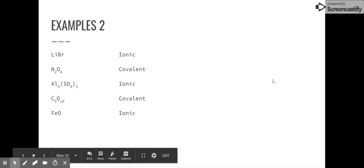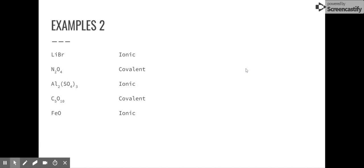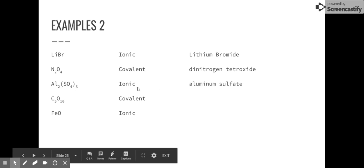So when we write the names, ionics are super easy. Just write them as you see them. There are no prefix. So it's going to be lithium. And we're going to change the ending to -ide with bromide. N2O4. This is a little bit more challenging. I have to use those prefixes. So dinitrogen. There's two nitrogens and four oxygens. Al2SO4. That's aluminum sulfate. Remember, SO4 is a polyatomic ion. So I'm going to name it as I see it on the periodic table. Covalent. Pentacarbon decaoxide. C5O10. I've got to use those prefixes.